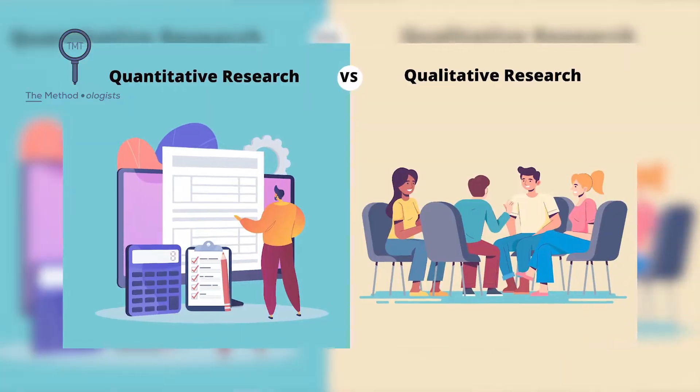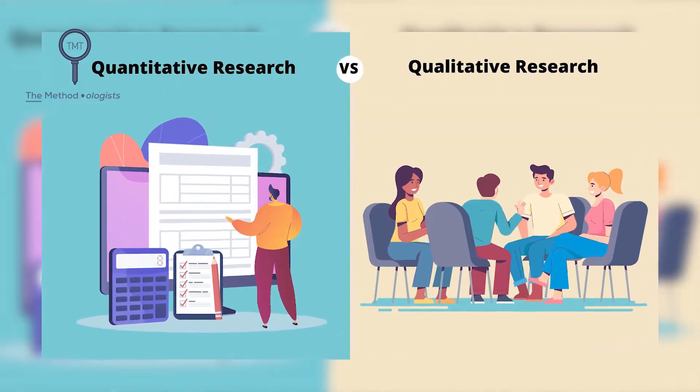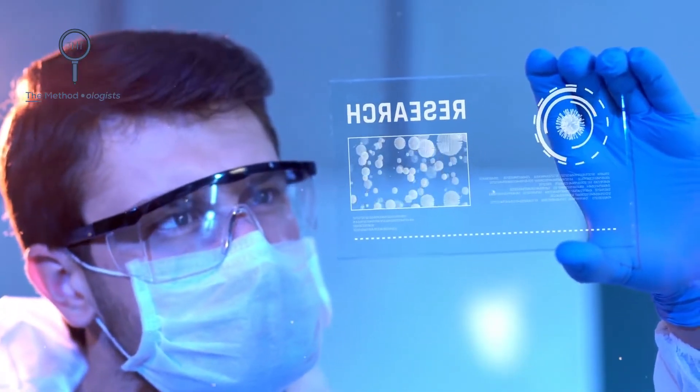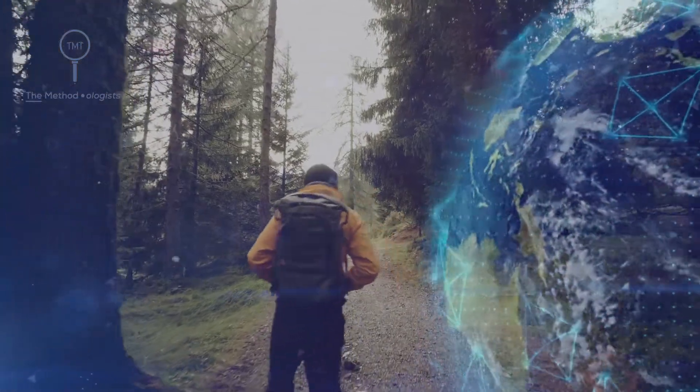With this, we conclude our introduction to qualitative research. We differentiated qualitative and quantitative research and talked about six methodologies. Each methodology offers a unique lens to explore and understand the world around us. The choice of methodology will depend upon your research question, the context, and the philosophical stance you take as a researcher.